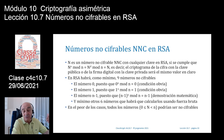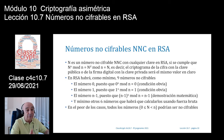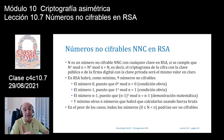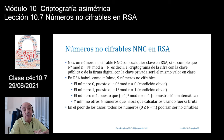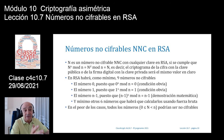Para claves reales hoy en día trabajamos con dos primos P y Q de 1024 bits, que al multiplicarlos nos da un módulo de cifra N de 2048 bits, y trabajamos con una clave pública que todo el mundo usa: el número 4 de Fermat, de 17 bits, 65.537.